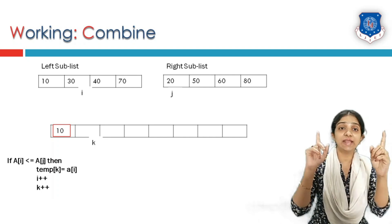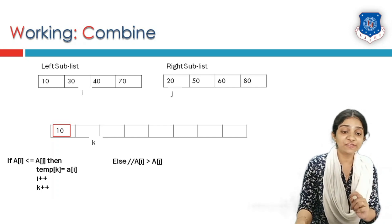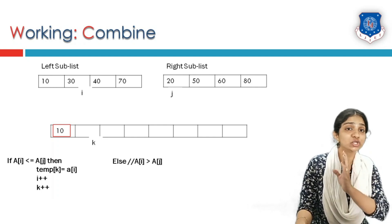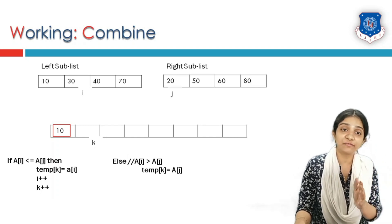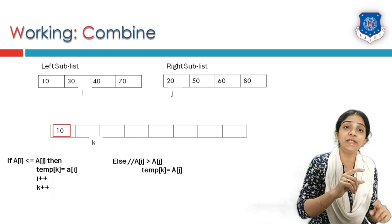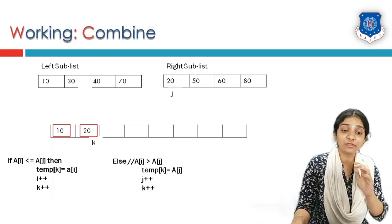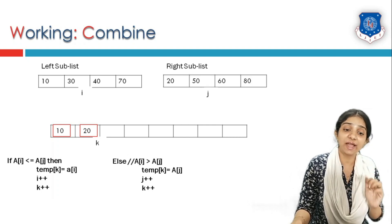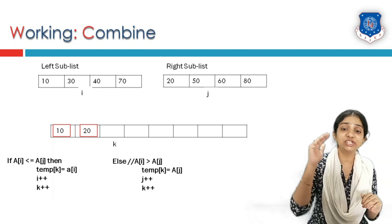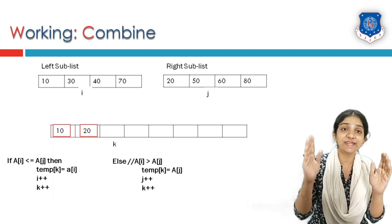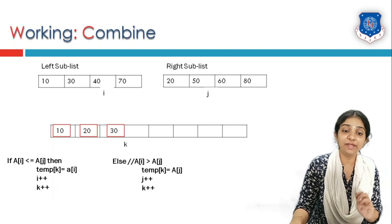Continuing: element at i is 30, element at j is 50. Is 30 less than 50? Yes, so 30 is copied and i and k are incremented. Next, 40 and 50 are compared — 40 is lesser, so a[i] is copied and only i and k are incremented. Now element at i is 70 and element at j is 50. Is 70 less than 50? Condition is false, so element at j (50) is copied into temp[k], j and k are incremented.